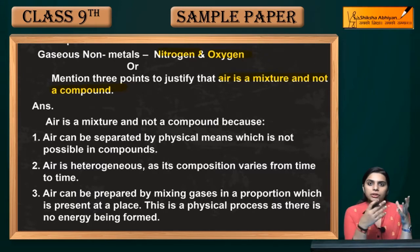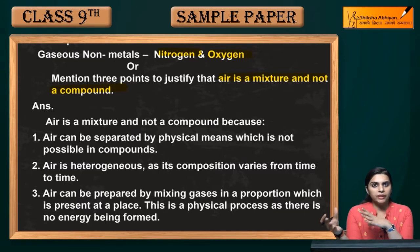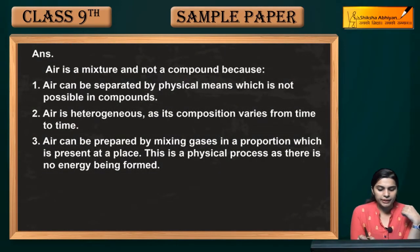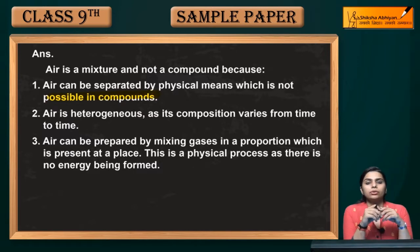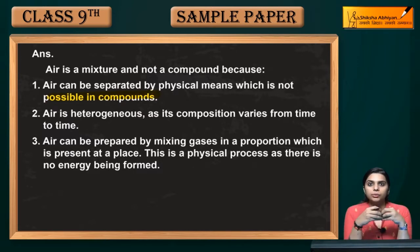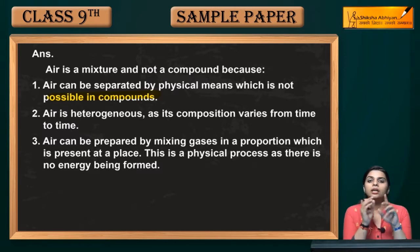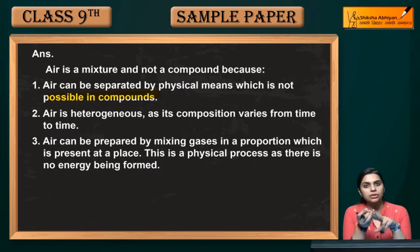Now why is it not a compound? Mixtures and compounds are different. Air can be separated by physical means, which is not possible in compounds. In a mixture you can change the composition — you can change the proportion of dust particles and gases — but in compounds this does not happen. So in this way air is a mixture, not a compound.